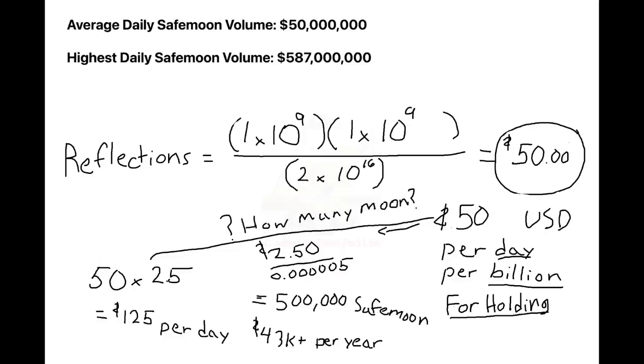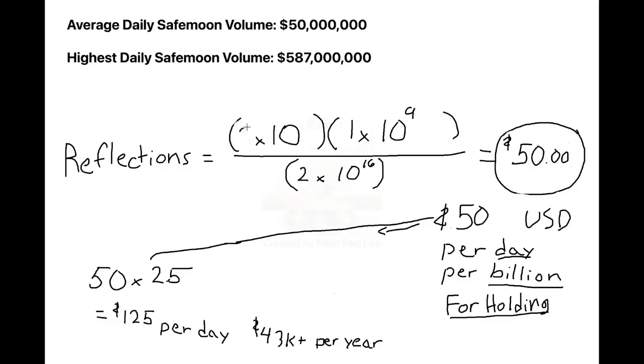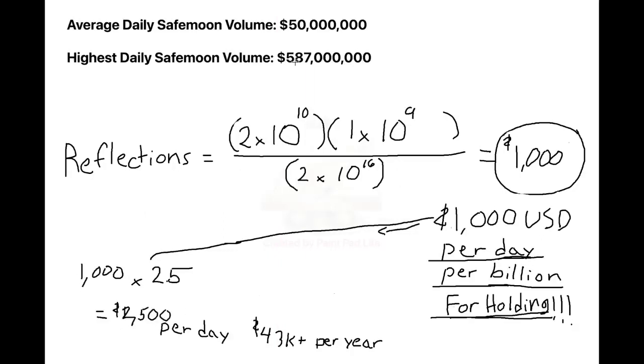I believe that SafeMoon can easily reach $20 billion in volume daily with the exchange, the wallet, debit cards, purchase through USD via Simplex, and if any of that Gambia stuff ever pays off. So if we reach Doge-level volumes, substituting in 20 billion SafeMoon, 1 billion... sorry, 1 billion SafeMoon, $20 billion, we get $1,000 per day, per billion SafeMoon that you own. Or myself personally would be getting $2,500 per day, or $912,000 per year.